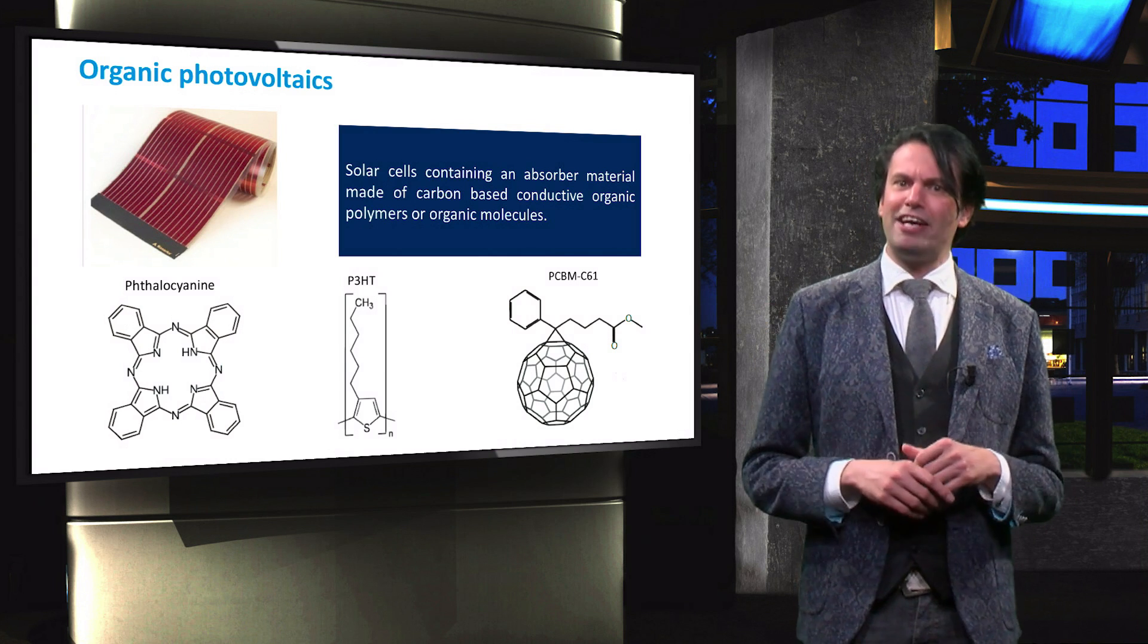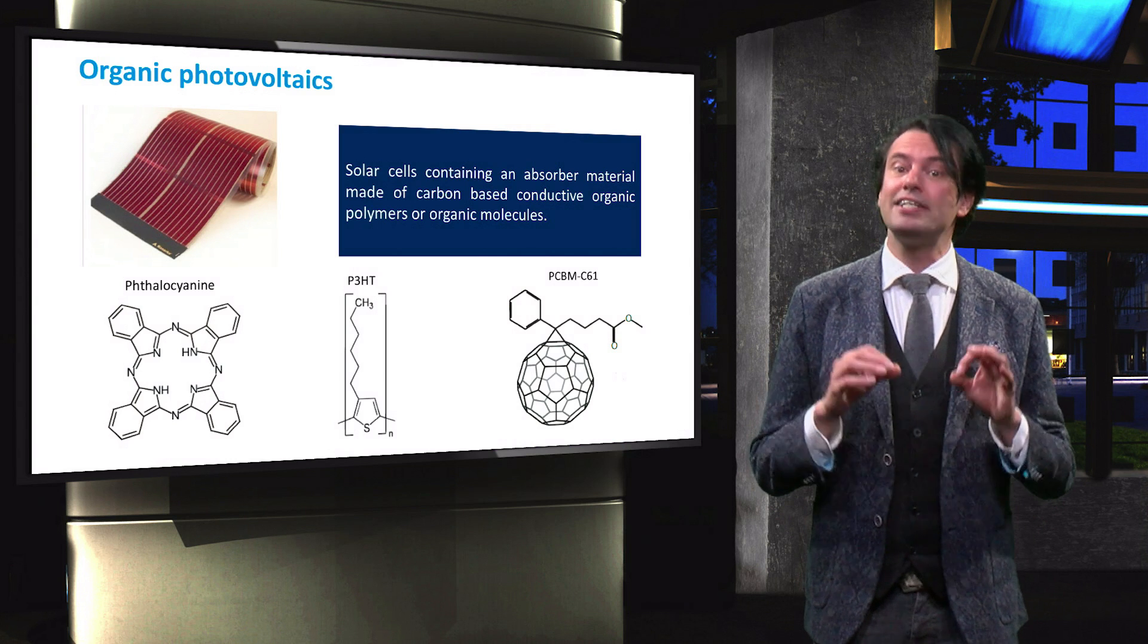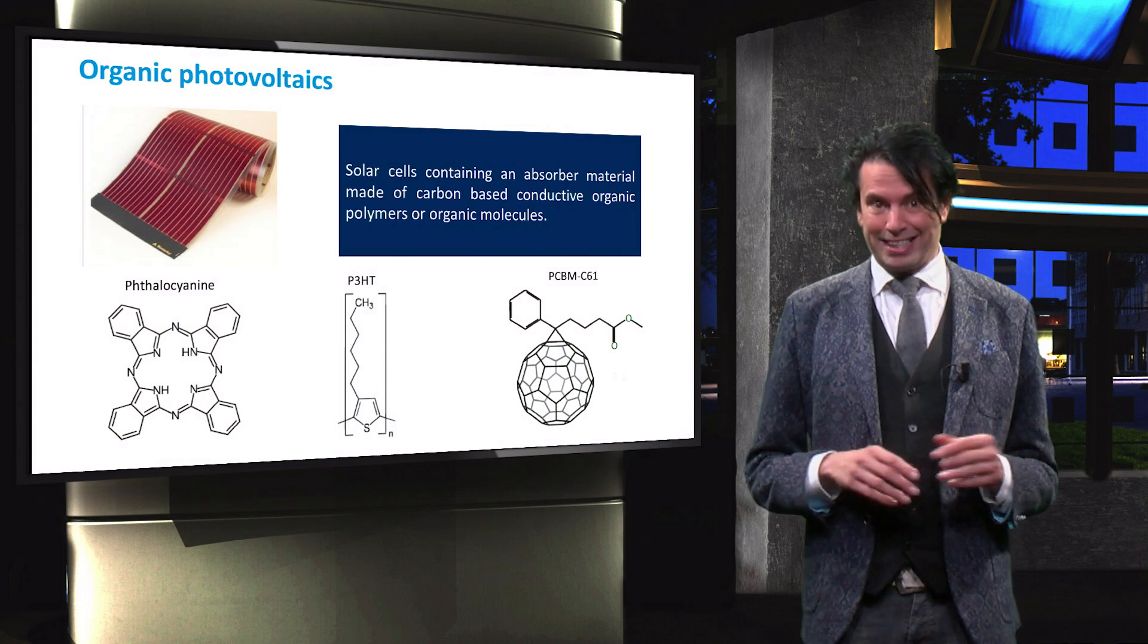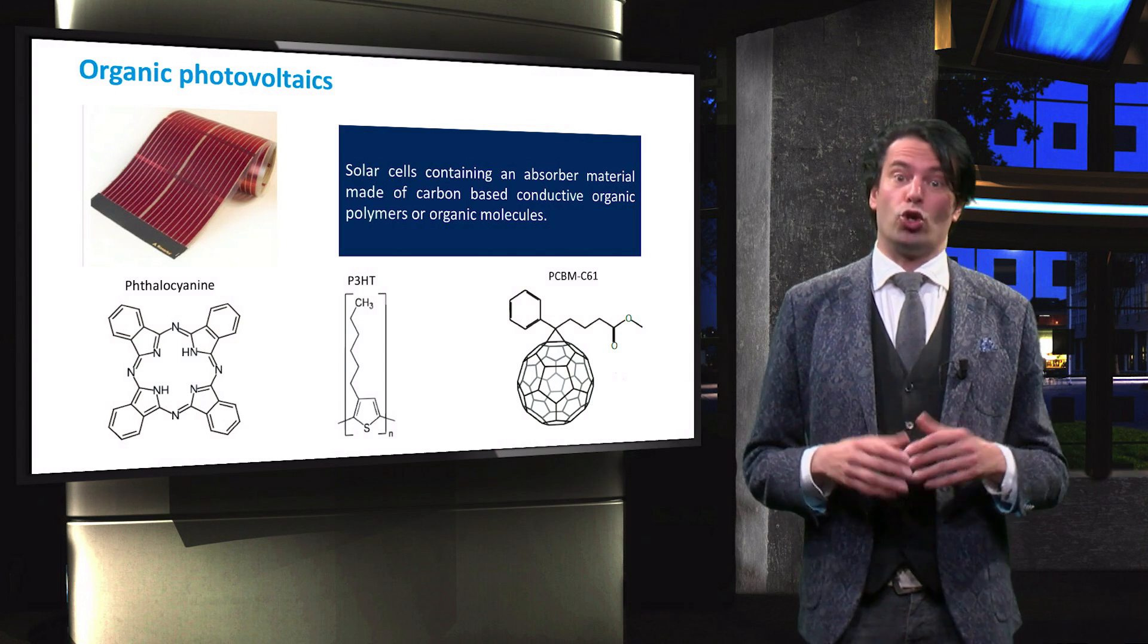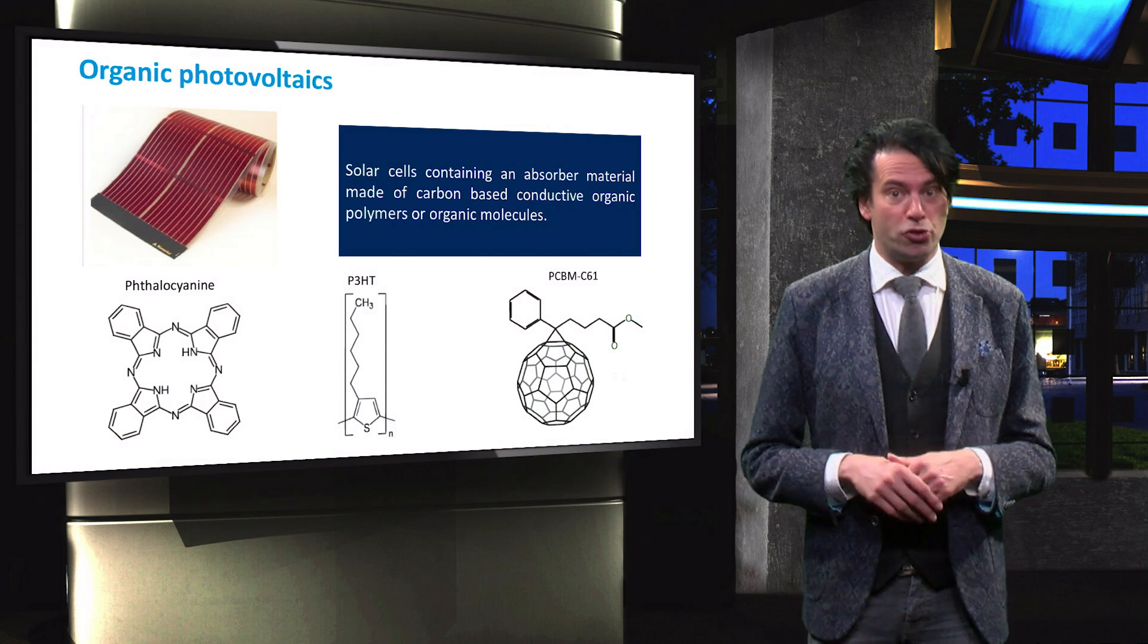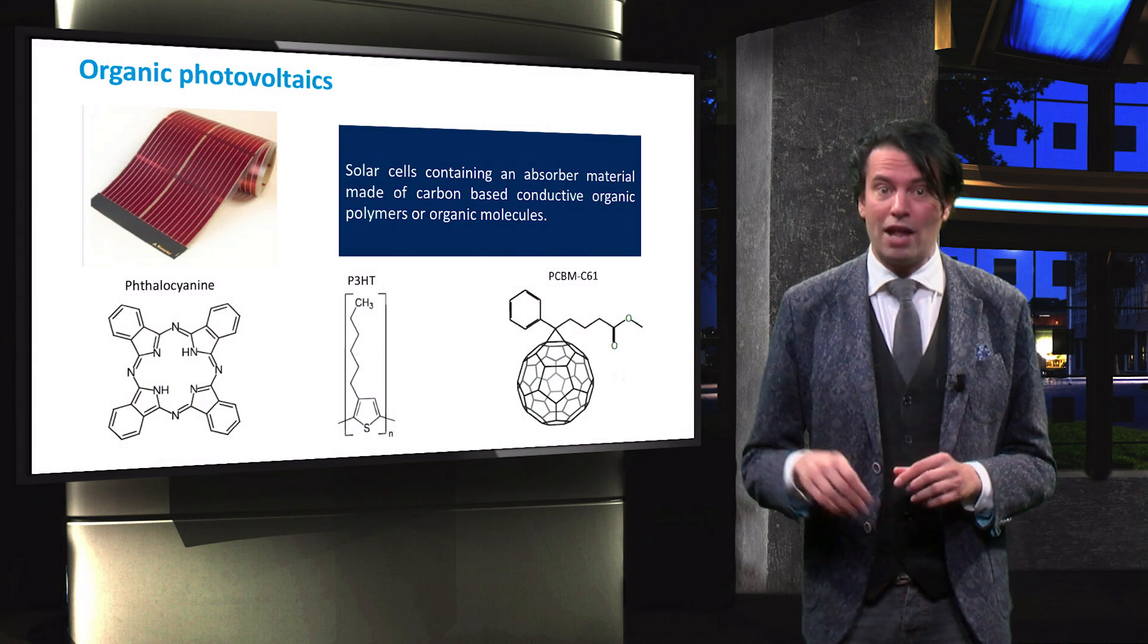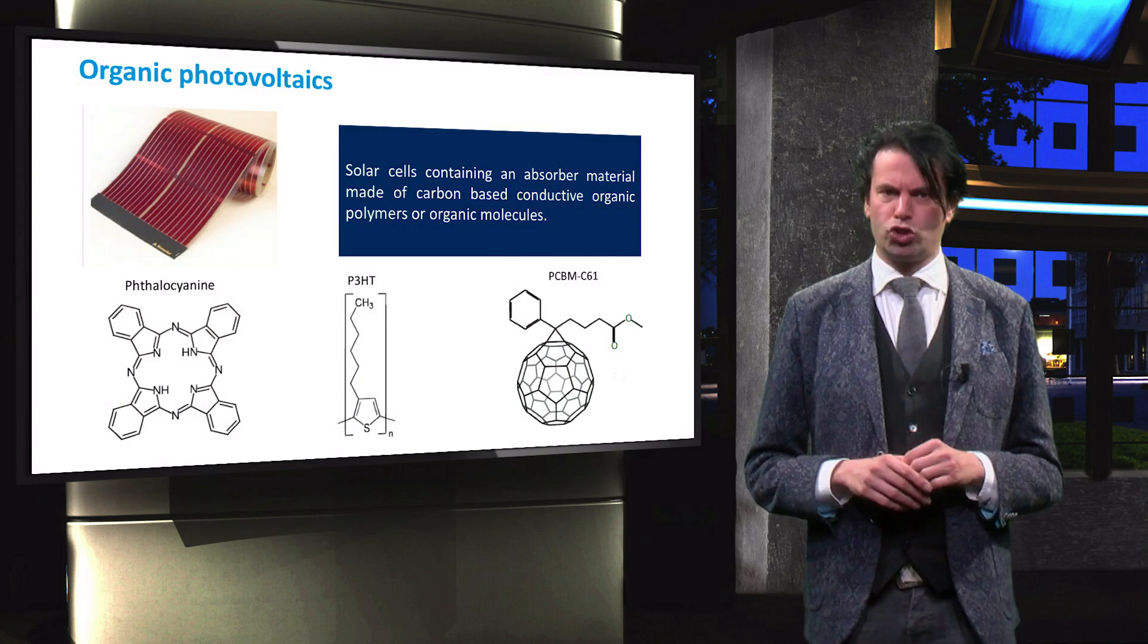The organic solar cells can therefore be produced in a variety of colors. Other advantages of using organic semiconductor materials are the potential low-cost and low-temperature production and the possibility to deposit on mechanically flexible and other thin or transparent substrates.